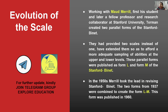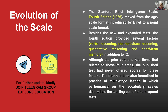In 1937, the two parallel forms L and M were created. Then in 1950, Merrill took the lead to revise, and in 1960 these two forms were combined into a single form called LM. Moving to 1986, the Stanford-Binet Intelligence Scale Fourth Edition moved from the age scale format to a point scale format.